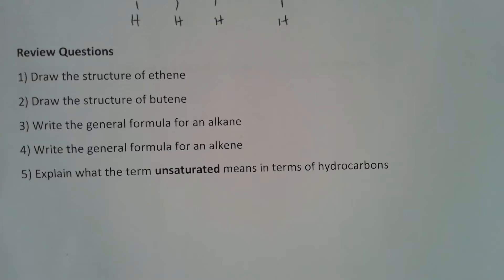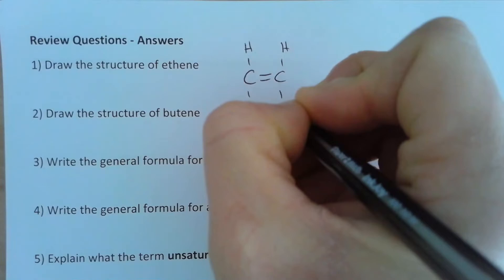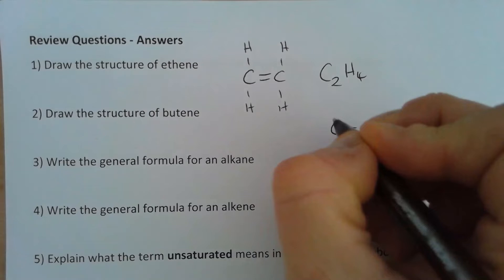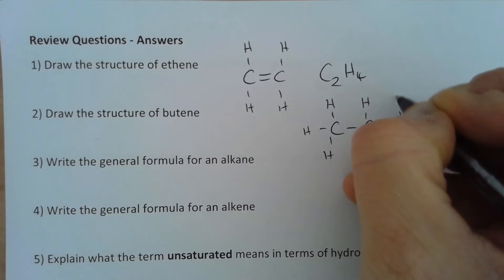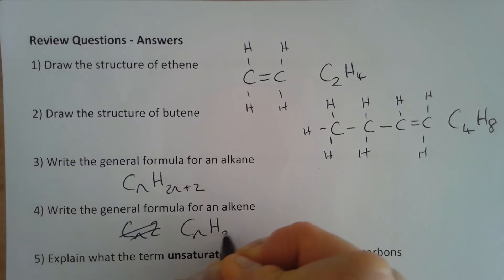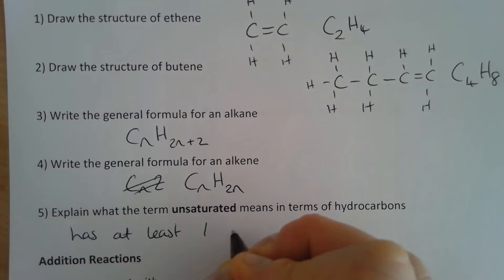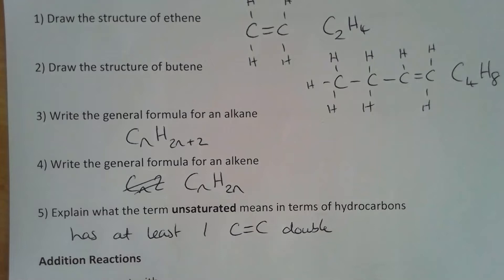Here are five questions to review what we've covered — pause the video and have a go. Ethene would have the structure with formula C₂H₄. Butene would have this structure with formula C₄H₈. The general formula of an alkane is CₙH₂ₙ₊₂, and for an alkene it is CₙH₂ₙ. Unsaturated means it is a hydrocarbon that has at least one carbon-to-carbon double bond.